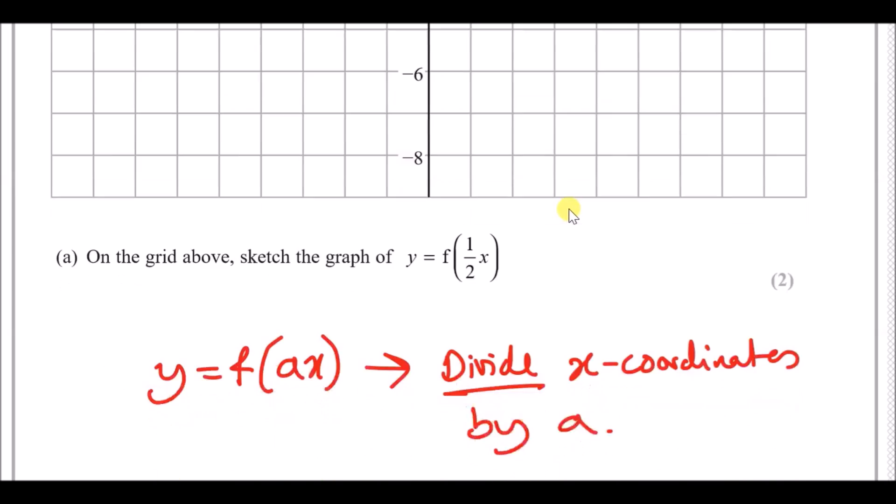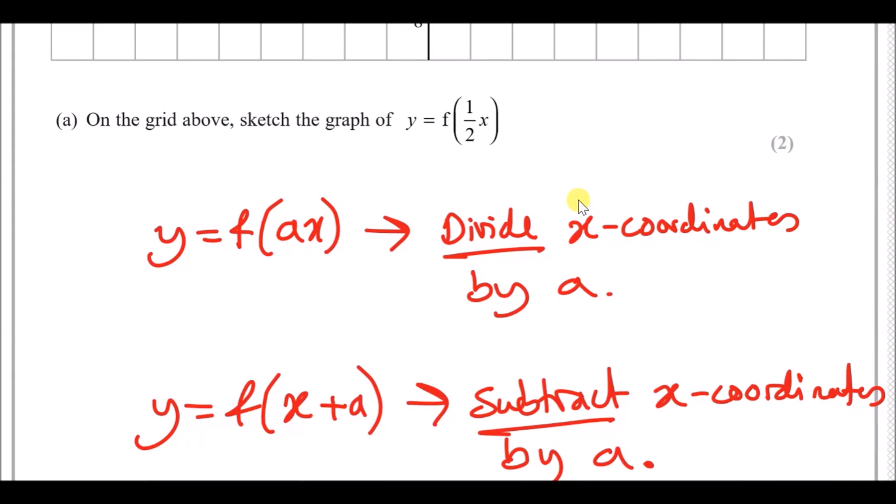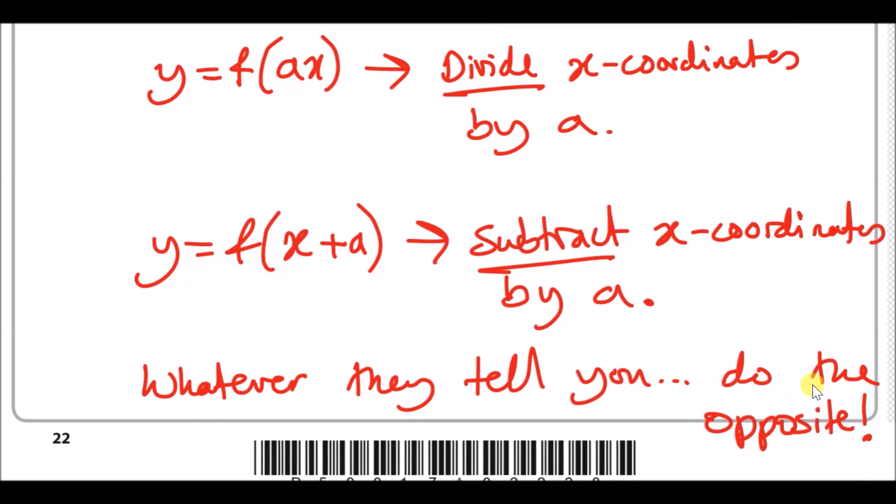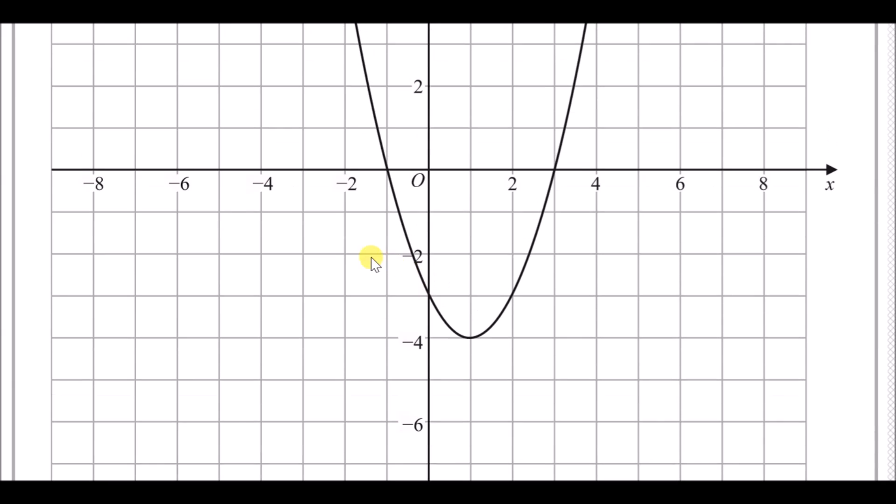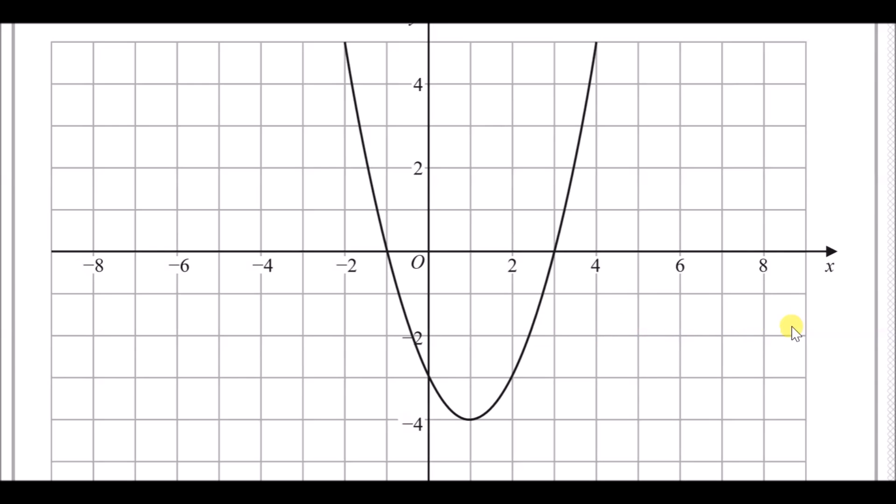There's a few rules for this one. When you get a function of, say, ax, all that literally means is you've got to divide x coordinates by a. So in essence, whatever's inside the bracket, inside the function, you do the opposite way it tells you. Literally here, whatever they tell you, do the opposite. So if it said 2x, divide by 2. Because it's half x, divide by half, or opposite, times it by 2. So essentially, for every x-coordinate here on the graph, we're going to times it by 2.